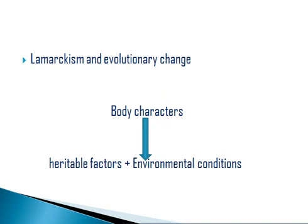Lamarckism and evolutionary change: although Lamarckism is incomplete and unable to explain all cases of evolutionary changes, it holds good to a certain extent. Body characters are not a single attribute; they are controlled by two factors: heritable factors (genes) that are transmitted from parents to offspring, and environmental conditions. This proves that environmental conditions also play a major role in determining body characters, and these changes can be heritable, transmitted from parents to their offspring.